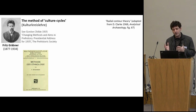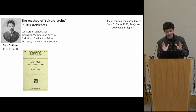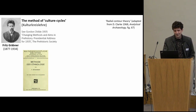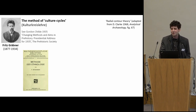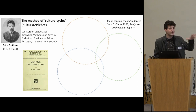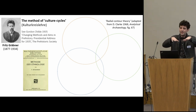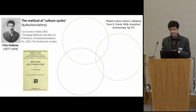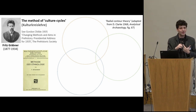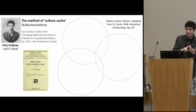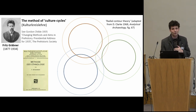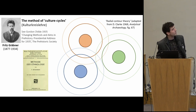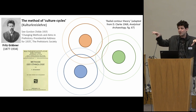Graebner published the very important book Methode der Ethnologie in 1911. Kulturkreis literally means culture circles. David Clarke, in his book Analytical Archaeology, has a representation of it — he calls it radio-culture theory. The idea is that today you see those circles with some interaction and overlap between them. As archaeologists, we have access to space and time, so we are extremely well placed to trace those circles back in time and try to find those primitive circles in different parts of the world. This was the idea of the diffusionist school in Austria.